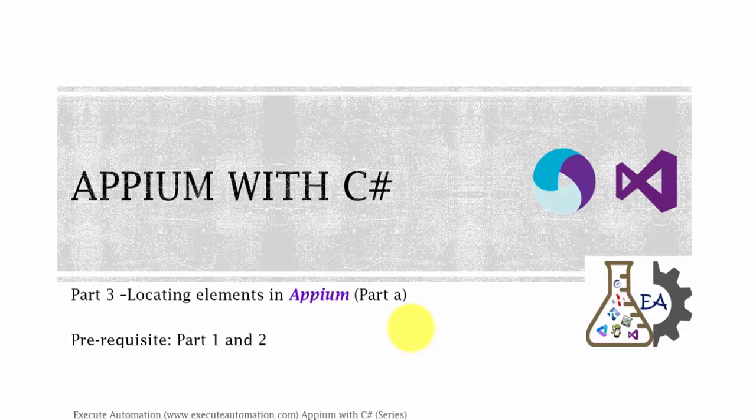Hey, hello guys, this is Karthik from exeguruautomation.com and this is part 3 of our Appium with C-Sharp video series. In this part we are going to start discussing about locating elements in Appium. This part is split into two parts - part A and part B. In this part we are going to discuss object identification properties like ID, and in the next part we will discuss some of the other identification properties used to identify controls in Android applications.